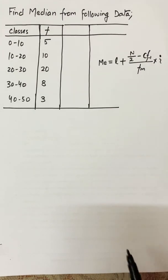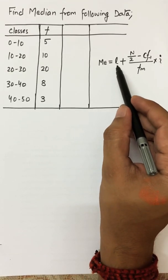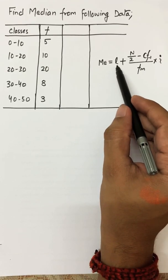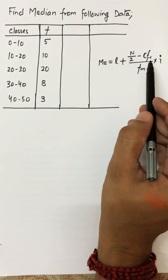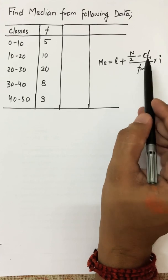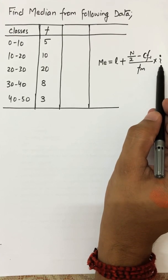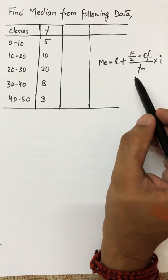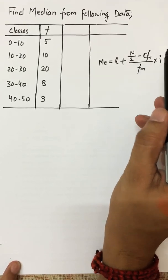To find the median, the formula changes a bit for continuous classes. The formula for median is: L is the lower limit of the median class, capital N represents the total number of values, CF suffix minus 1 means cumulative frequency of the previous class, FM means frequency of the median class, and I means the class interval.